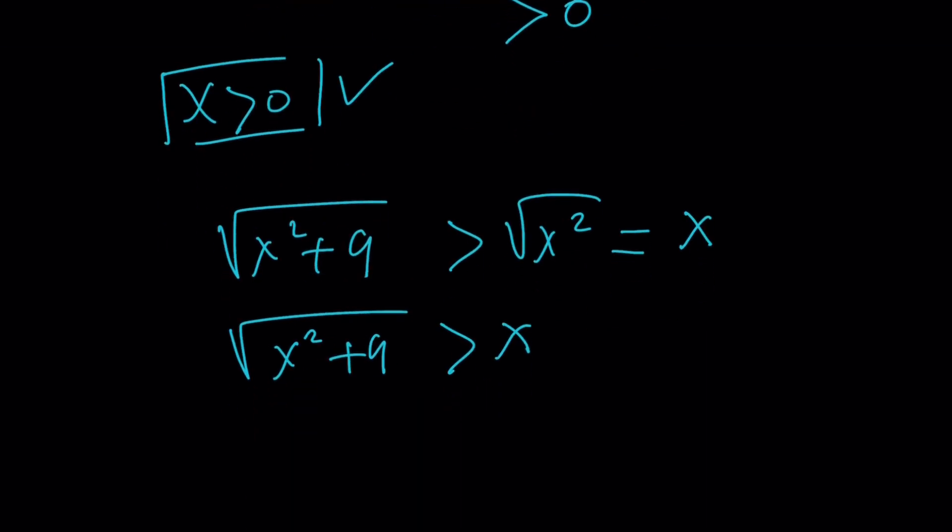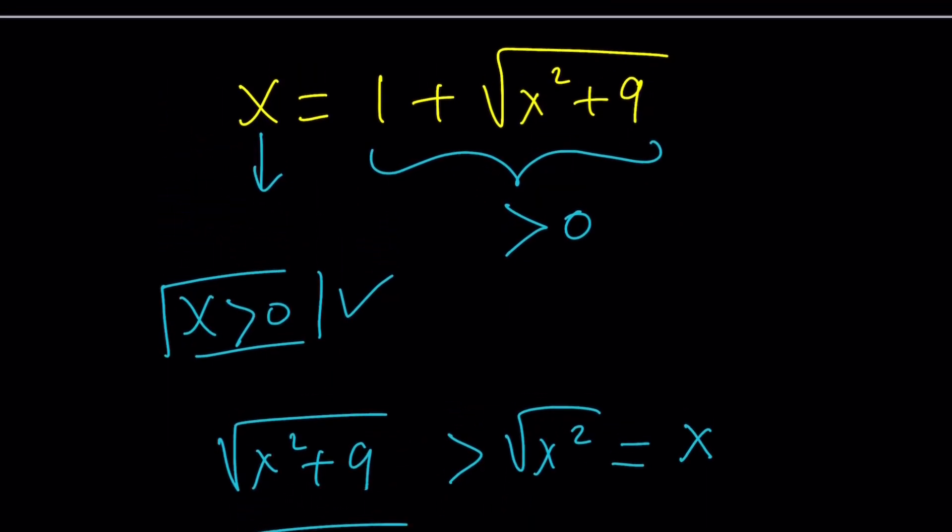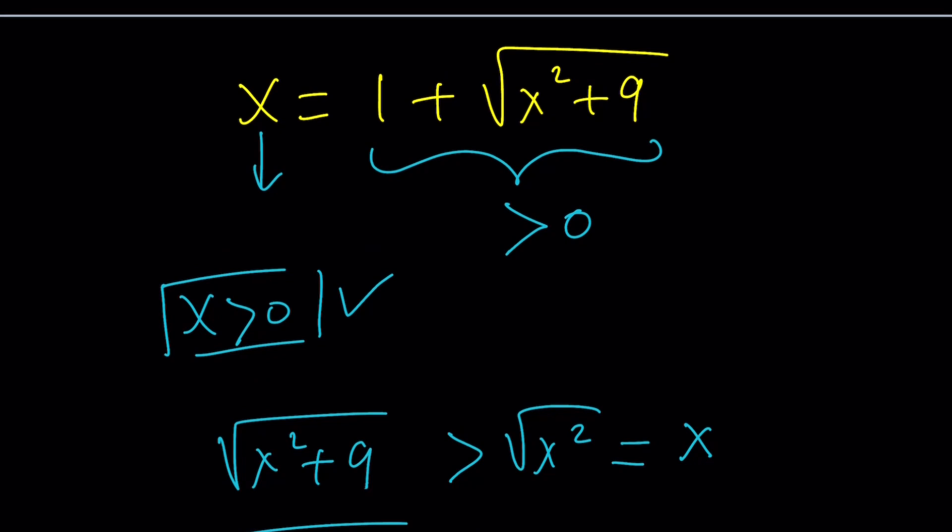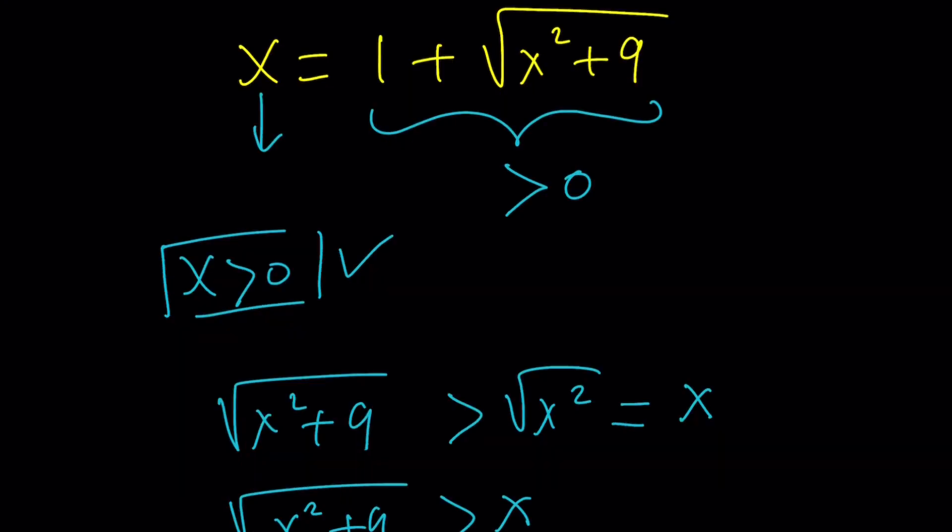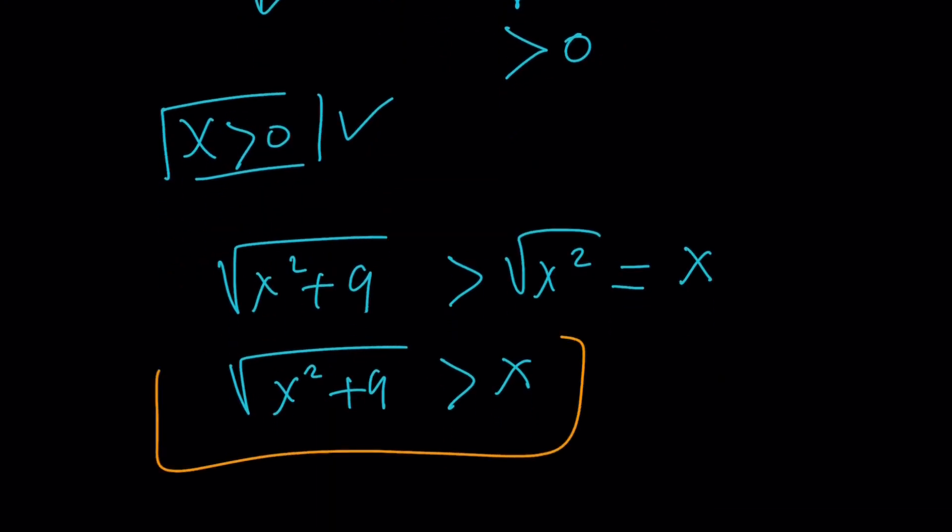So, when you add 1 to both sides, it's going to be even greater than x. So, how can that equal x? That's impossible, right? That's why we don't get any solutions from here because of this inequality.